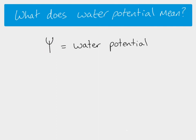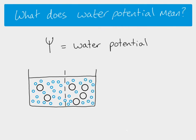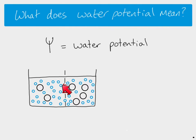If we think about a situation where we've got two solutions: the solution on the left has got a lot of water molecules and two solute molecules, and on the right we've got a solution with more solute molecules. These two are separated by a partially permeable membrane, representing a cell membrane, which means that some substances such as water are able to move through, but the solute molecules cannot — they're too big.